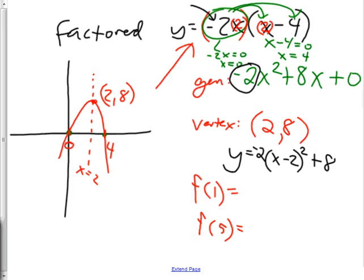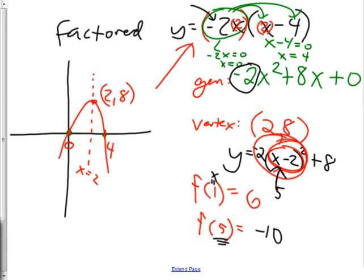The last things are f of 1 and f of 5. f of 1 means stick in x equals 1: 1 minus 2 is negative 1, negative 1 squared is positive 1, negative 2 times 1 is negative 2, plus 8 makes 6. For f of 5: 5 minus 2 is 3, 3 squared is 9, 9 times negative 2 is negative 18, plus 8 makes negative 10. That was one of the hardest types of questions — it makes you do many steps, like multiplying all the way out and then finding the vertex.